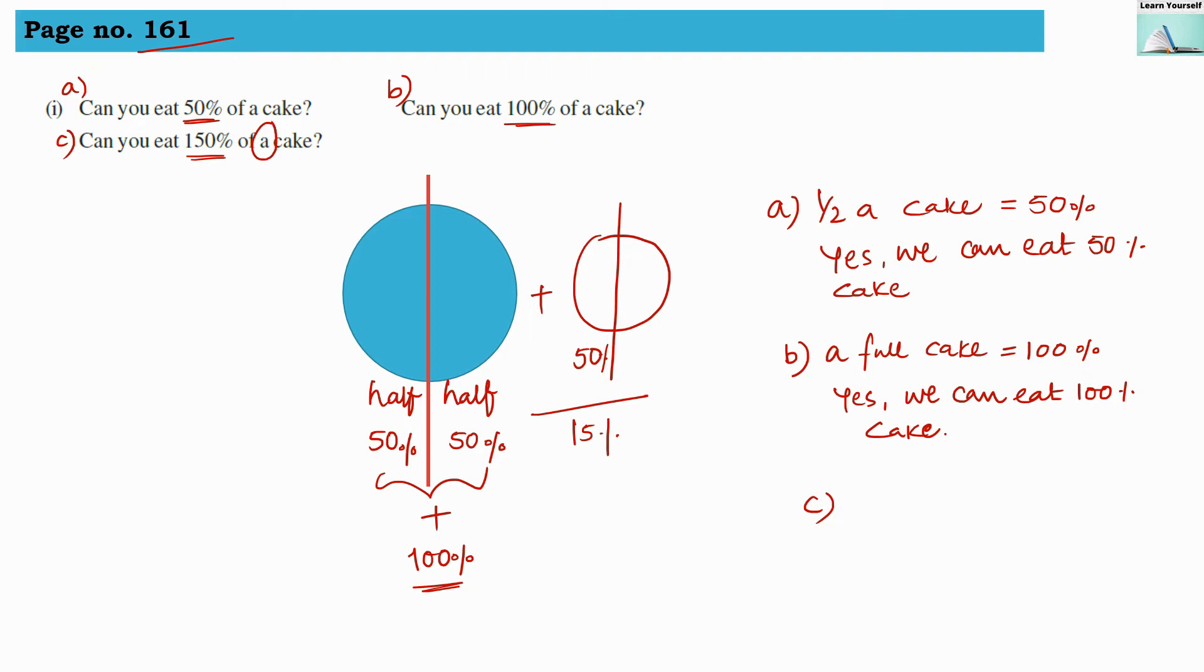Here this A is denoting us that we have only one cake. So from one cake we cannot eat 150% cake. So the answer for question C is going to be no, that we cannot eat 150% cake from one cake.